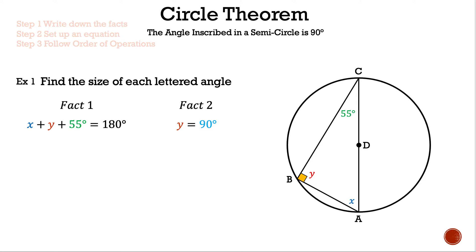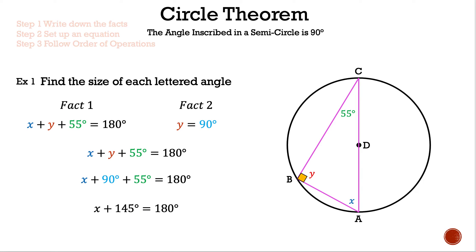Returning to fact one: x + y + 55° = 180°. Substituting y = 90°, we get x + 90° + 55° = 180°. Adding 90° and 55° gives 145°, so x + 145° = 180°. Subtracting 145° from both sides: x = 180° − 145° = 35 degrees.